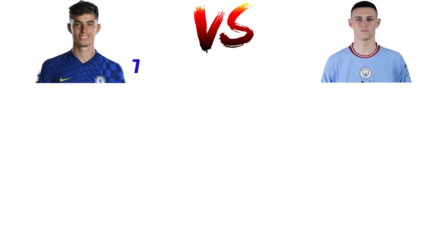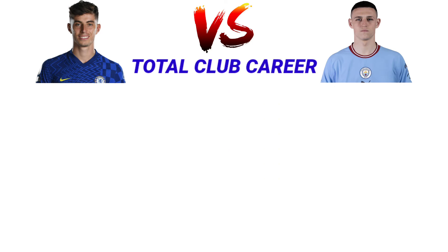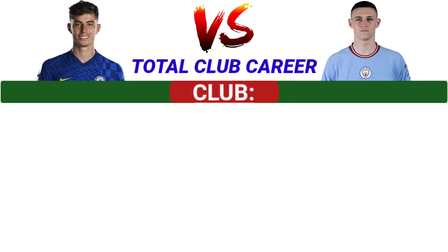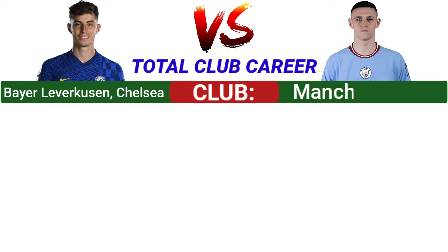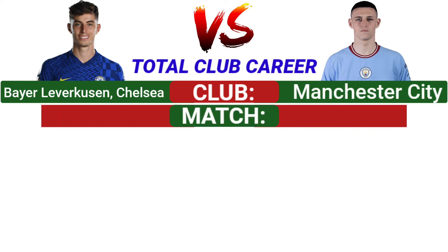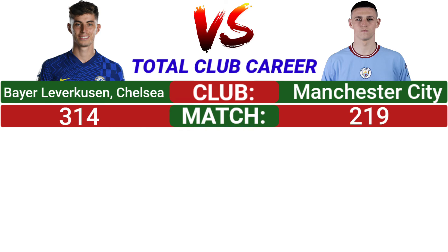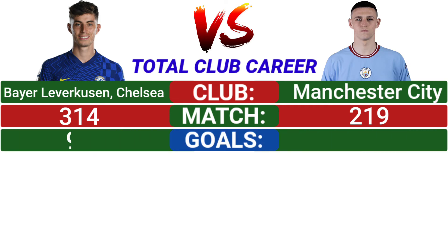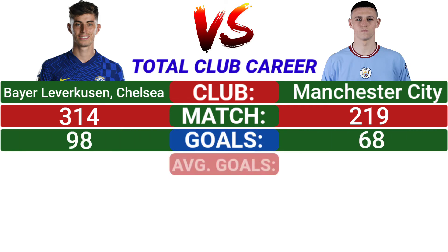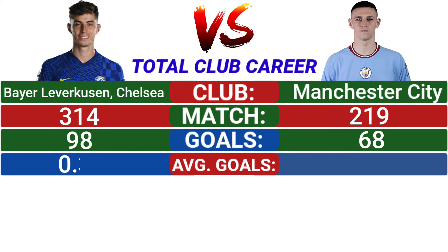Now let's compare their total club career statistics. In his club career, Havertz played for Bayern Leverkusen and Chelsea, and Phil Foden played for Manchester City. Havertz's total appearances are 314 and Phil Foden's total appearances are 219. Havertz scored 98 goals and Phil Foden scored 68 goals. Both have an average goals per match of 0.31.